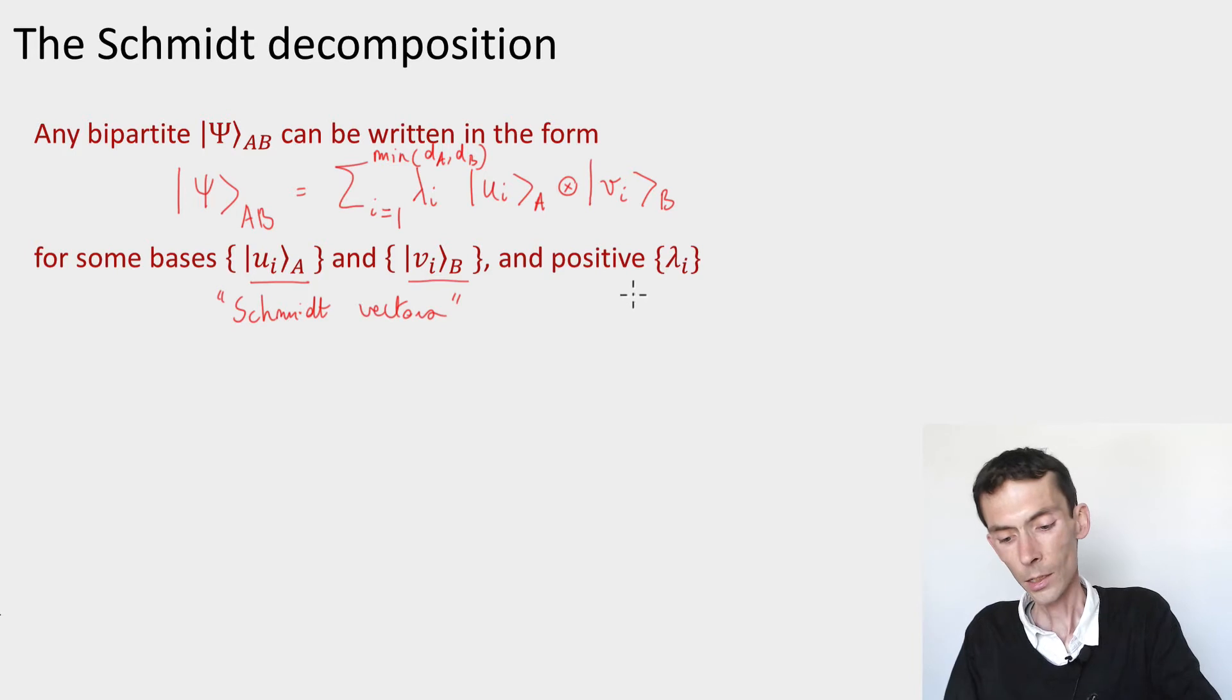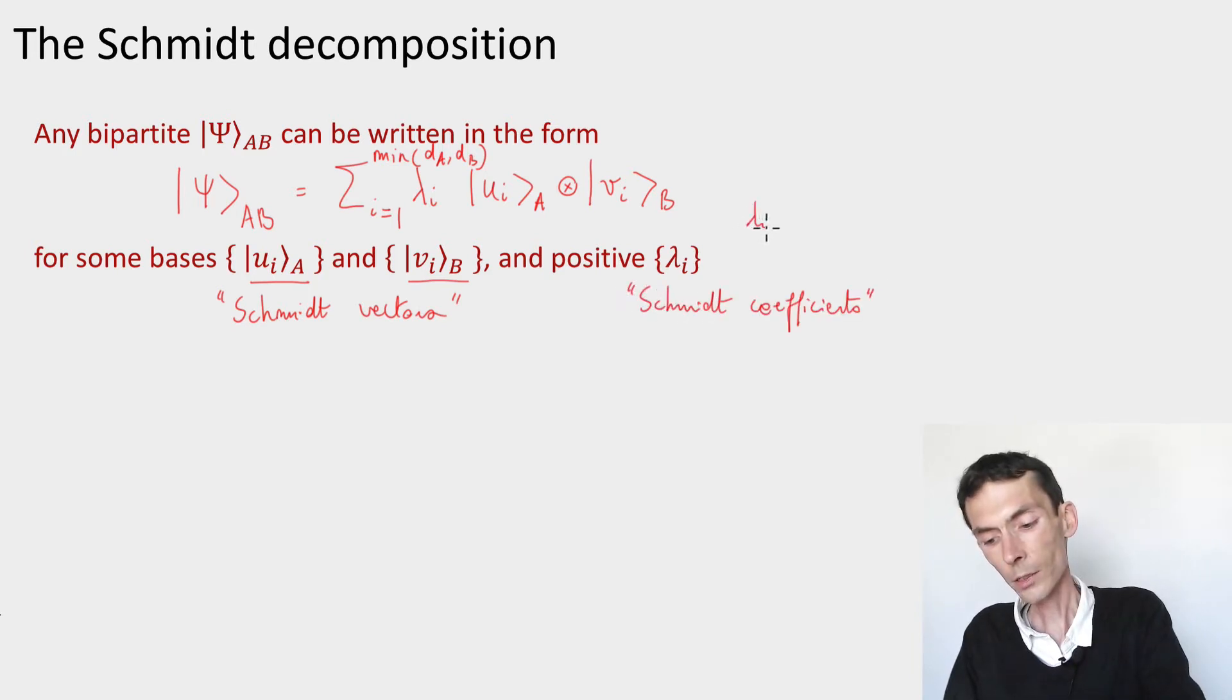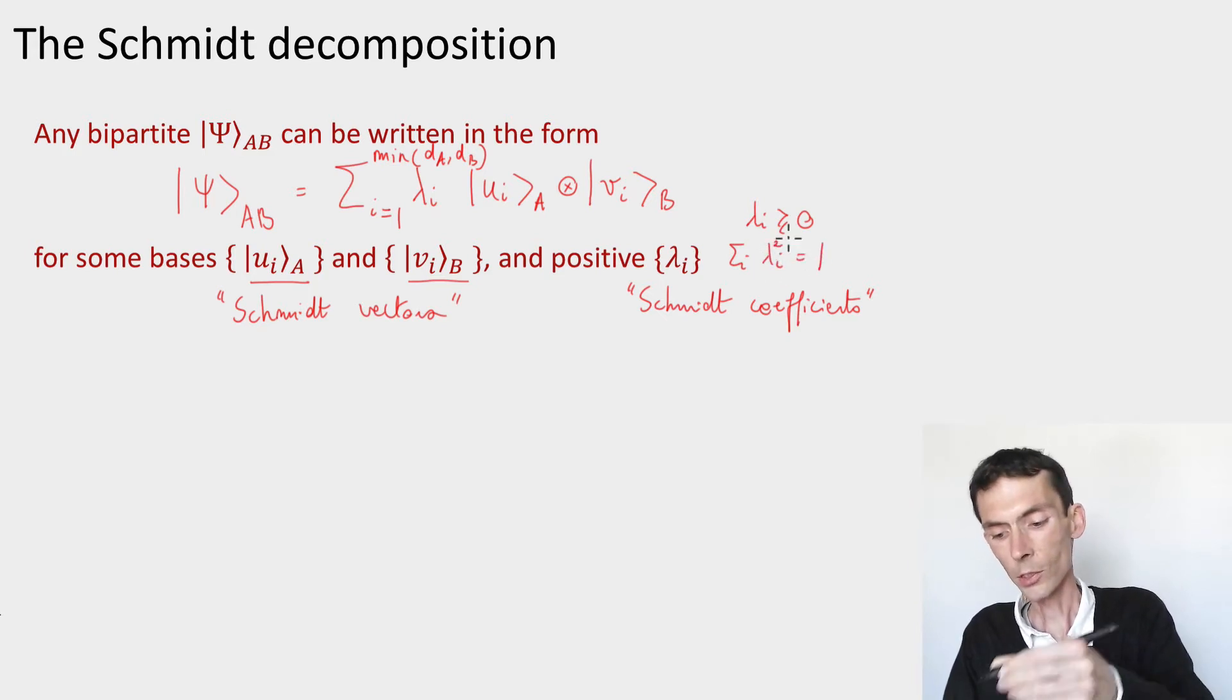And then the lambda i, these are called the Schmidt coefficients, they're non-negative, and the sum of their squares is equal to one. This is to make sure that the state psi is a well-normalized state.